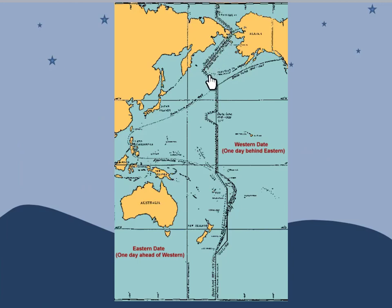Here we have the international date line. You'll notice it's not a straight line — it's not straight because we don't want to cut across any countries, which would make work and school schedules really weird. On the east side, we're one day ahead of the west side.